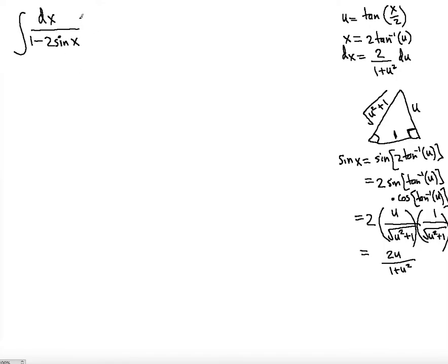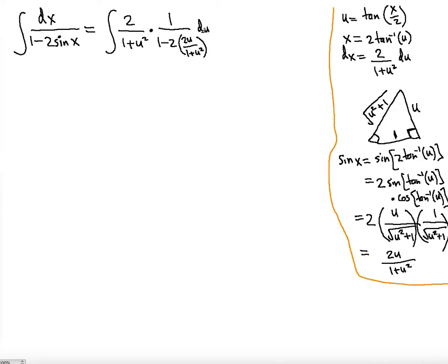Now we can substitute into the integral. The dx is 2 over (1 plus u²), and we multiply it by 1 over (1 minus 2 times sine x), where sine x is 2u over (1 plus u²). Simplifying, we should get 2 times the integral of 1 over (1 plus u²) multiplied by 1 over (1 plus u²) du.